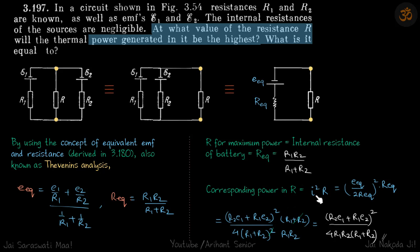And the corresponding power will be I square R, where I is the total current generated in the circuit, which is E upon R equivalent plus R. And because R is equal to R equivalent in case of maximum power, current becomes E equivalent by two times R equivalent.